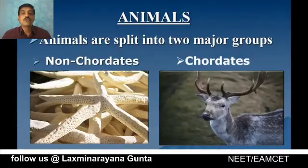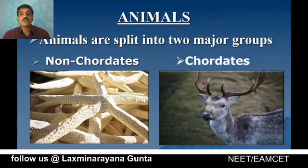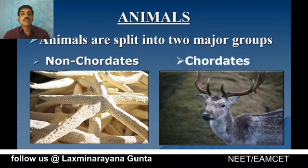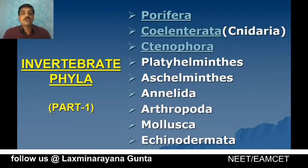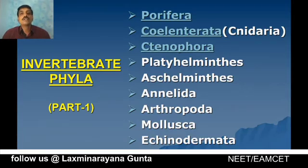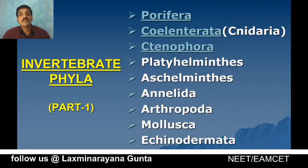Animals are split into two major groups: the non-chordates and chordates. Chordates possess a notochord at some point in their life, whereas non-chordates don't have a notochord. Before we discuss invertebrate phyla, let us understand what is an invertebrate and what is a vertebrate. Vertebrates are animals having a backbone, while invertebrates don't have any backbone.